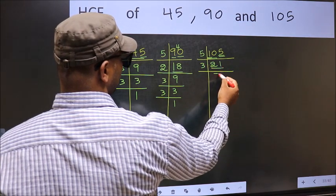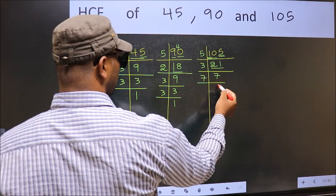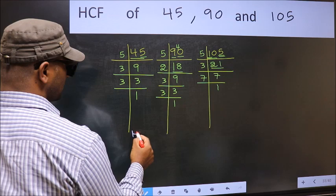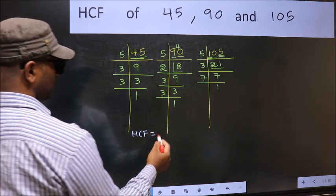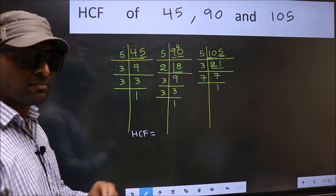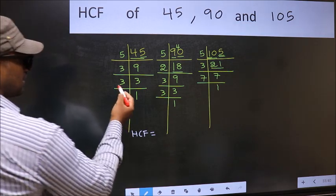Now 21 is 3 sevens 21. 7 is a prime number, so 7 ones 7. Therefore, our HCF is, HCF is the product of numbers which should be present in these 3 places.